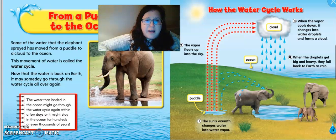From a puddle to the ocean. Some of the water that the elephant sprayed has moved from a puddle to a cloud to the ocean. The movement of water is called the water cycle. Now that water is back on earth, it may someday go through the water cycle all over again. A cycle is something that happens over and over and over. The water that landed in the ocean might go through the water cycle again within a few days. It might stay in the ocean for hundreds or even thousands of years.